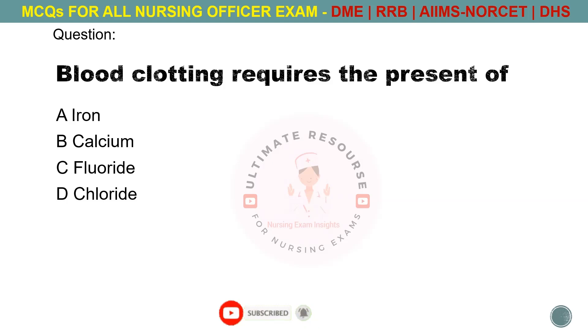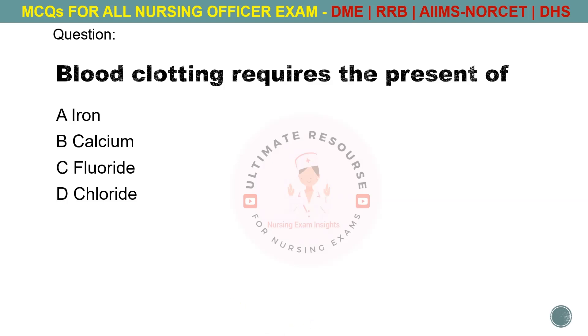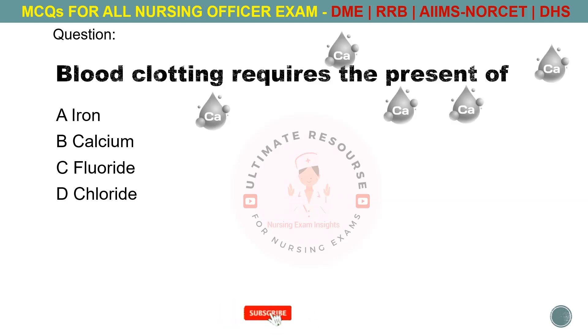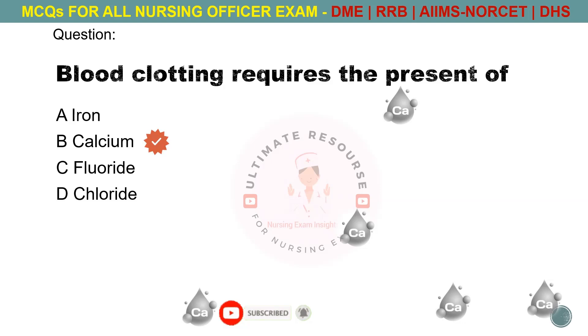Blood clotting requires the presence of. Options are A. Iron, B. Calcium, C. Fluoride, D. Chloride. The answer is B. Calcium.